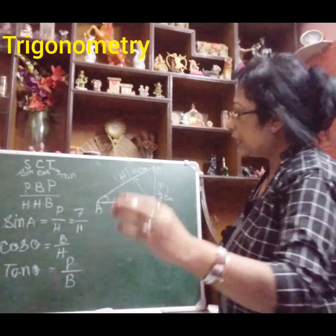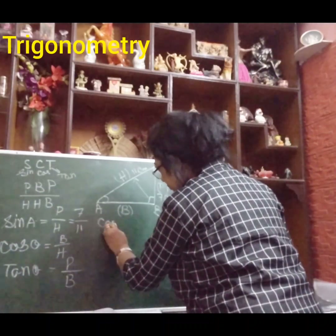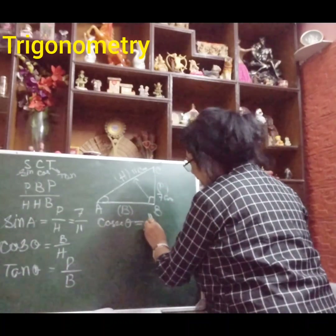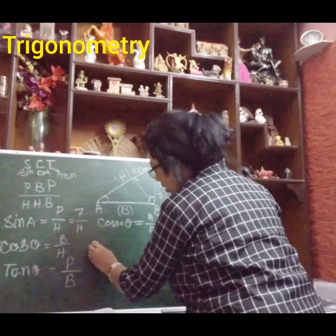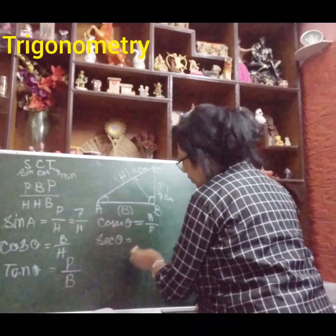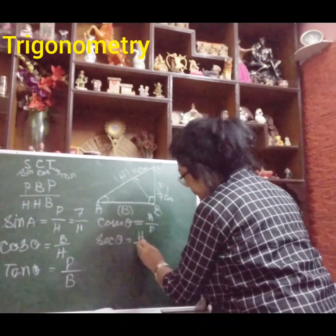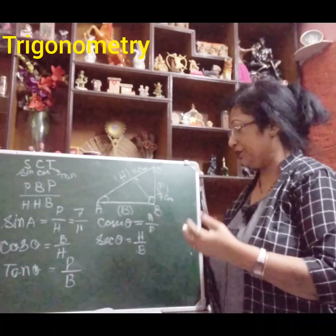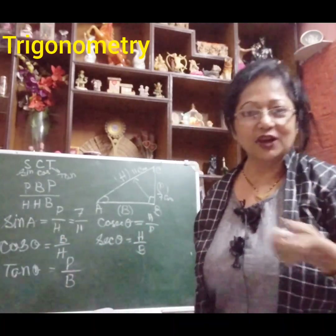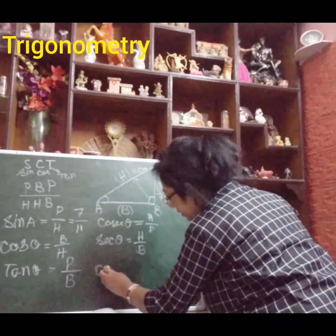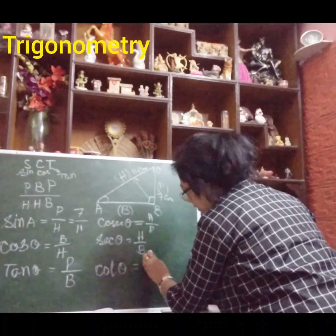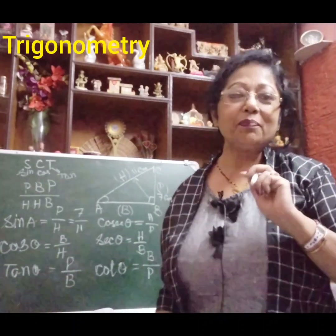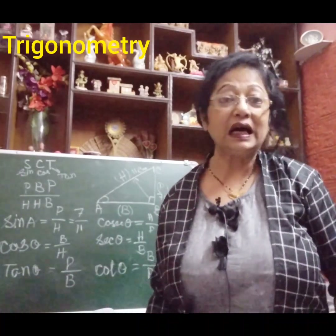For the reciprocal functions, you just flip the fractions. Sin theta's opposite is cosec theta — so cosec theta equals H by P, hypotenuse divided by perpendicular. Cos theta's opposite is sec theta — so sec theta equals H by B, hypotenuse divided by base. Tan theta's opposite is cot theta — so cot theta equals B by P, base divided by perpendicular. No need to learn so many separate things!